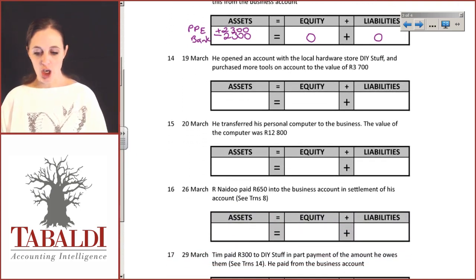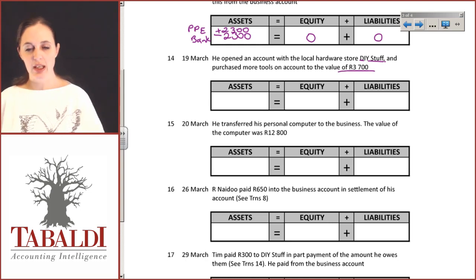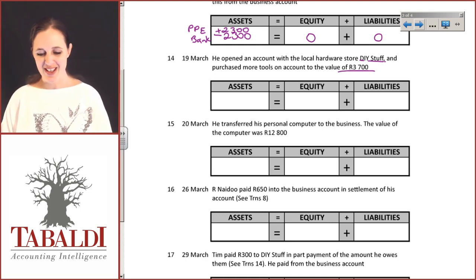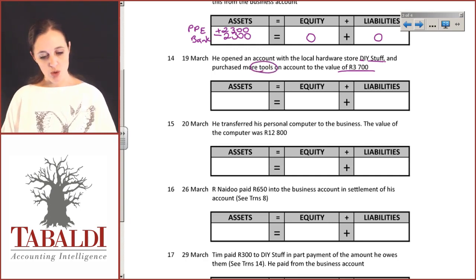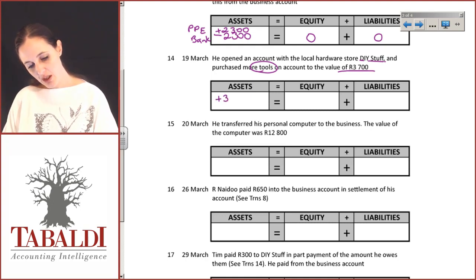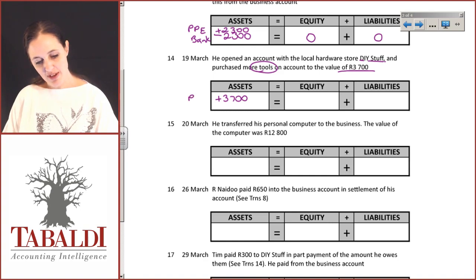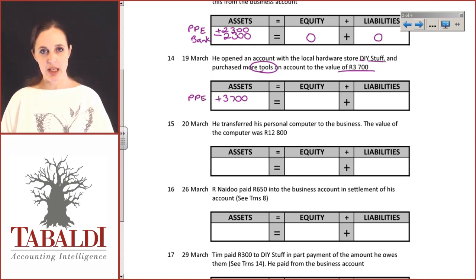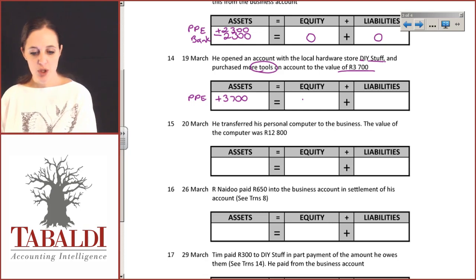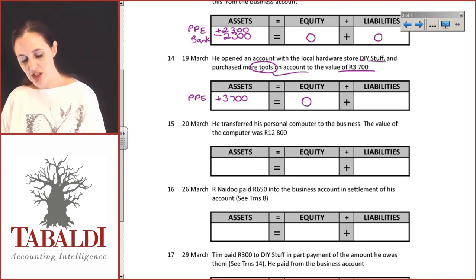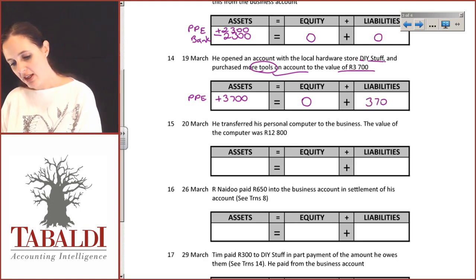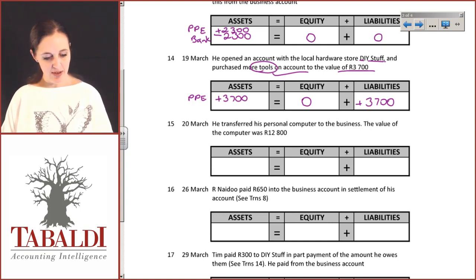He opened an account with the local hardware store DIY Stuff and purchased tools on account to the value of 3,700 Rand. There is no impact on the bank account. He bought more tools, so the value of assets — his PPE — has increased by 3,700 Rand. His equity is not impacted here because he purchased these on account. He's going to have to pay DIY Stuff 3,700 Rand in the future, so his liabilities have increased.